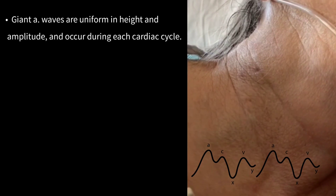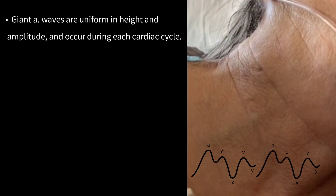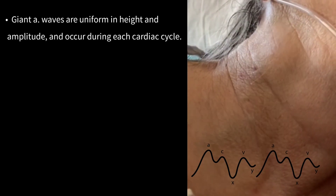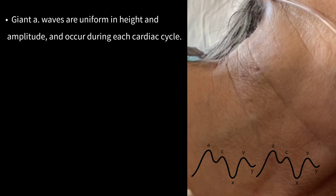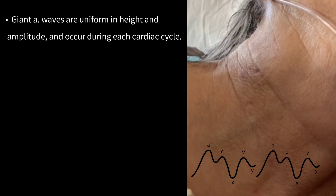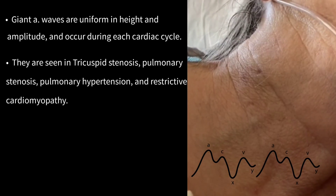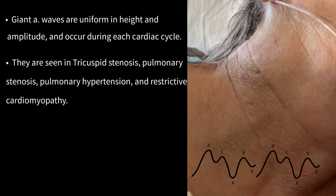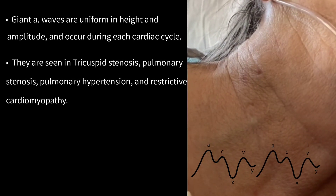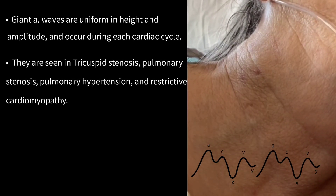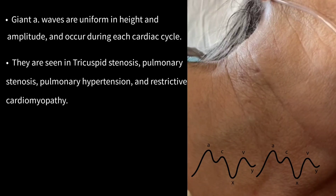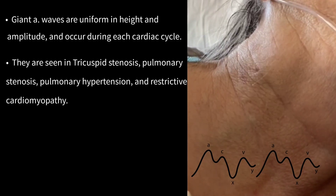Giant A-waves are uniform in height and amplitude and occur during each cardiac cycle. They are seen in tricuspid stenosis, pulmonary stenosis, pulmonary hypertension, and restrictive cardiomyopathy.